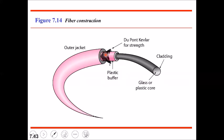The glass portion is covered by a plastic buffer, and then in turn this is covered by DuPont Kevlar for protection — the same material used in the fabrication of bulletproof vests. This protection is provided because glass is extremely fragile. The whole structure is then covered by an outer jacket normally made of PVC or Teflon.